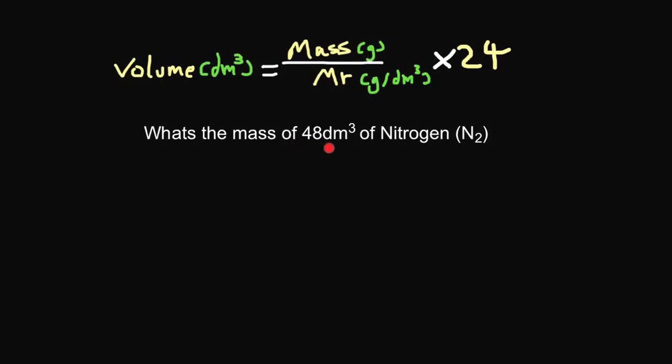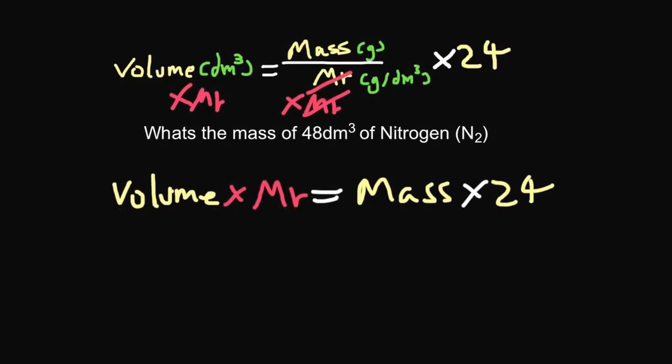What's the mass of 48 dm cubed of nitrogen? So in this question, we have to rearrange the equation to get it to equal mass. The way to do that, well, we want to get mass on its own. So if we times both sides by the Mr, the Mr's will cancel out here, and what you'll end up with is volume times Mr equals mass times 24.